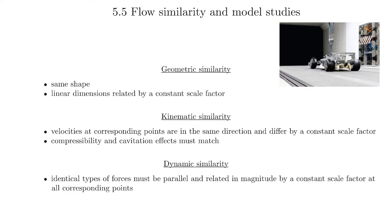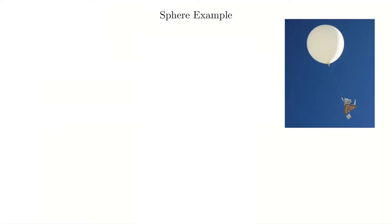Finally, dynamic similarity means you must have identical types of forces — parallel and related in magnitude by a constant scale factor at all corresponding points. You have to make sure that all forces acting on the vehicle in the scaled model in the wind tunnel relate identically to what the full size vehicle will experience. The question then becomes: how do you ensure similarity? We'll use an example — a sphere, specifically a weather balloon — to explain the basic idea. I'll go over the basics here and put the full example in a separate video.